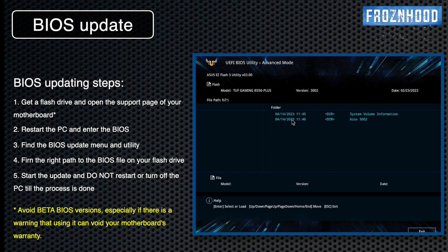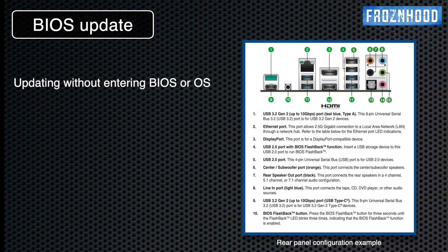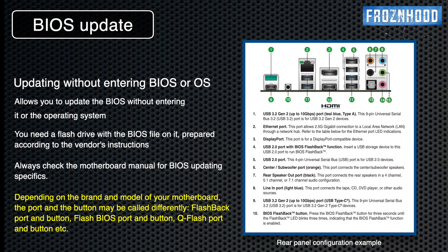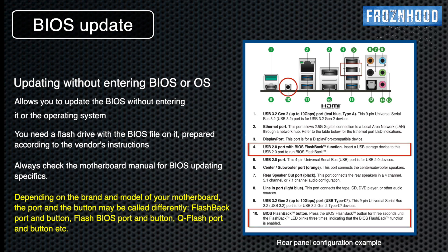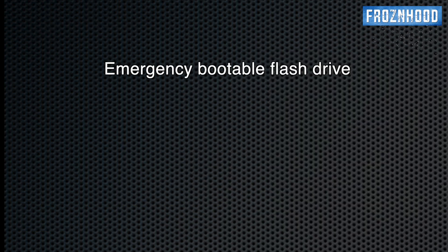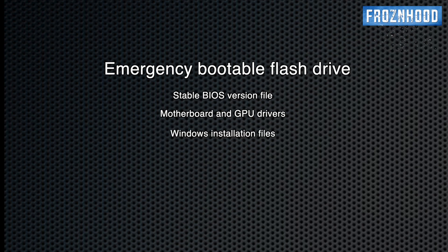If you need to update the BIOS but for some reason you can't start the PC and enter the BIOS, check the menu to find if you have a USB port with the flashback function and the flashback button. Usually you put the flash drive in this special port and press the button for several seconds — that starts the update process. I always keep a separate boot flash drive with a stable BIOS version, relatively up-to-date motherboard and video card drivers, and a Windows installation. Having such a flash drive is very useful for offline reinstalls when you don't have internet connection or a second PC that can go online.